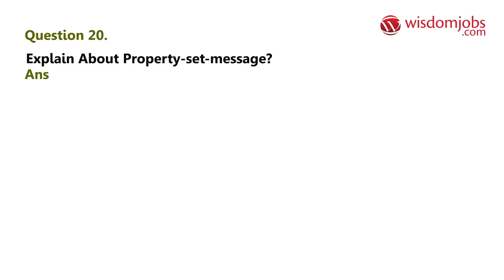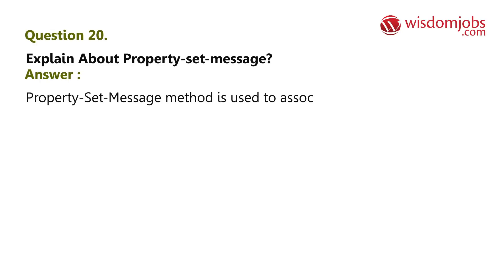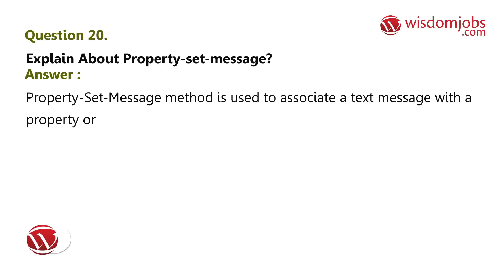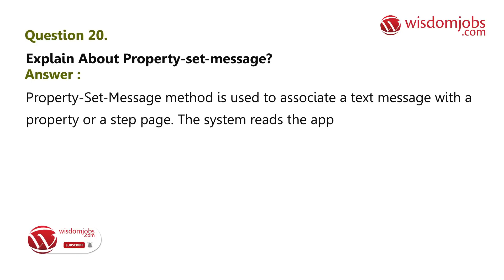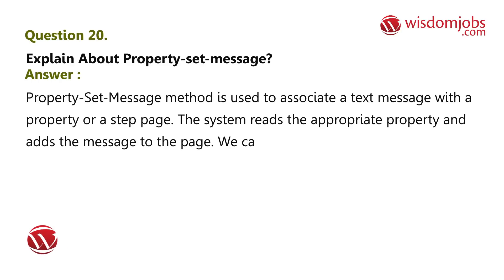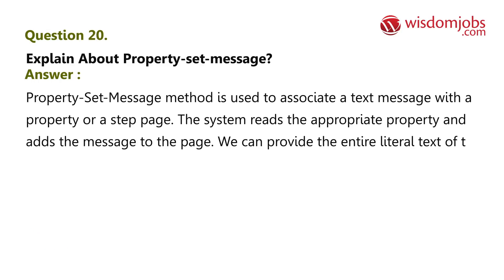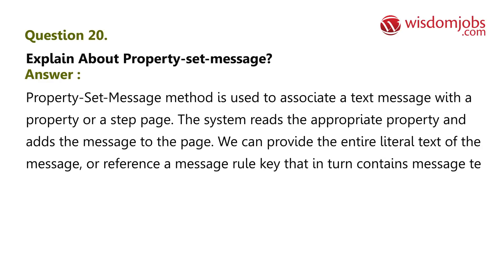Question 20: Explain the property set message method. Answer: The property set message method is used to associate a text message with a property or a step page. The system reads the appropriate property and adds the message to the page. We can provide the entire literal text of the message, or reference a message rule key that in turn contains message text of the rule-message rule type.